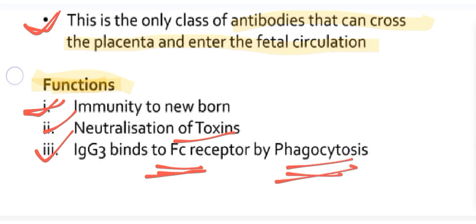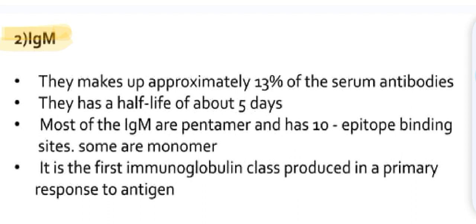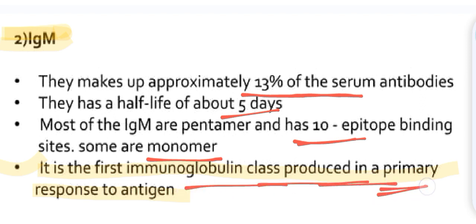Now we will see IgM. They make up approximately 13% of serum antibodies and their half-life is about 5 days. Most of the IgM are pentamer and has 10 epitope binding sites. Some are monomer. IgM is the first immunoglobulin class produced in a primary response to antigen. This point is very very important for exams.